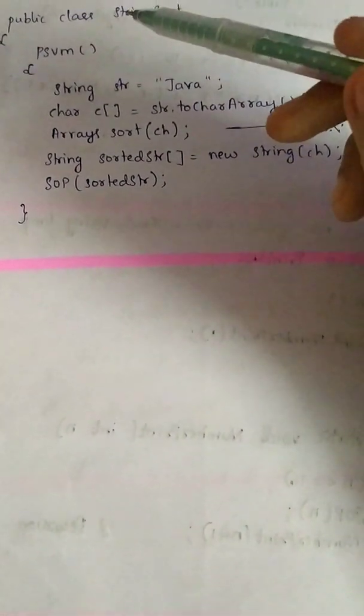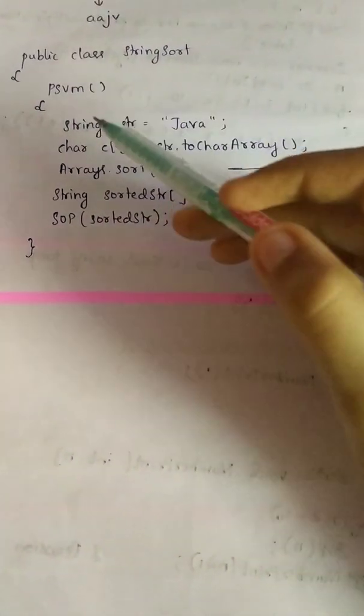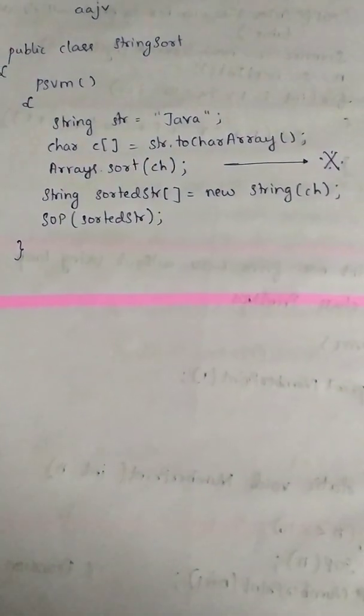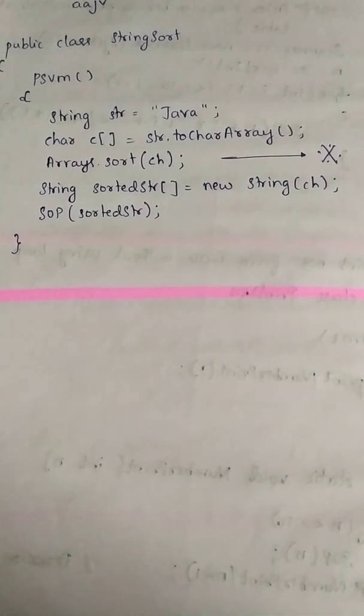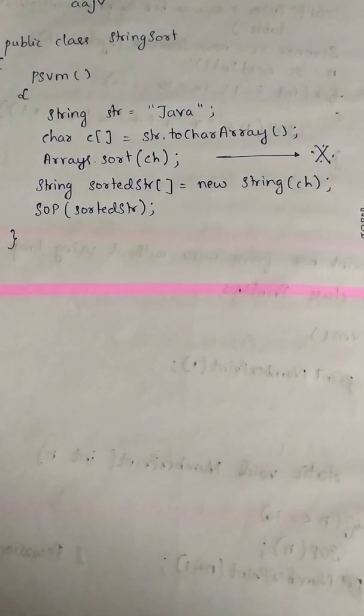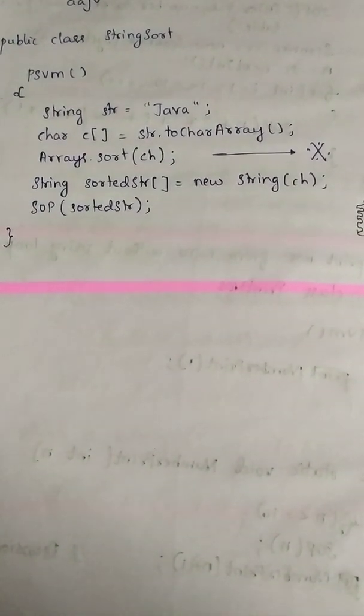Here is how you demonstrate that. We have taken the name of a class as StringSort. Here is the main public static void main method. We have taken the string name as Java—you can even read it from the user—and we have converted this string to character using toCharArray.